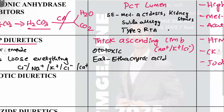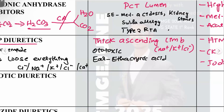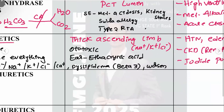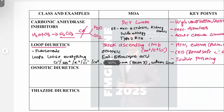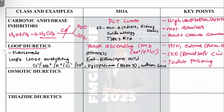Other side effects of loop diuretics include dyslipidemia, because they act on beta-3 receptors which promote lipolysis. They can also worsen gout, as compensatory hyperuricemia occurs in the body, worsening the gout condition.